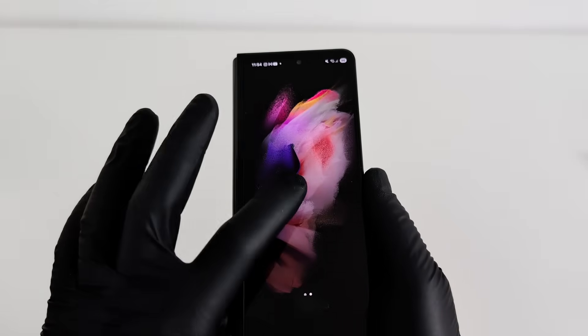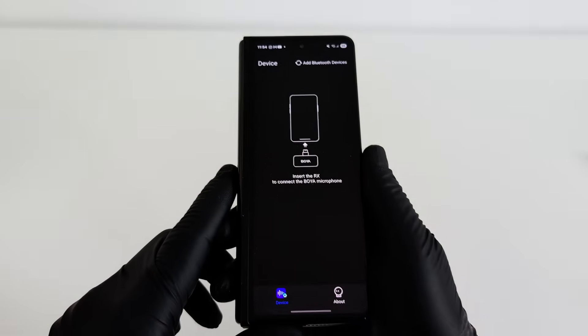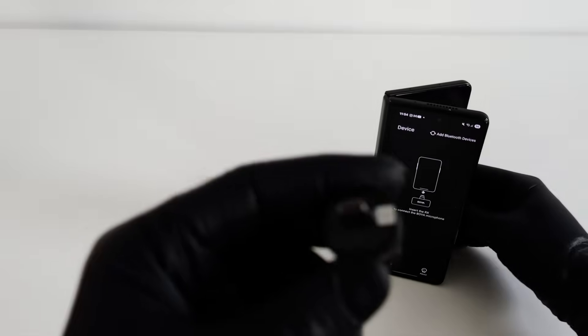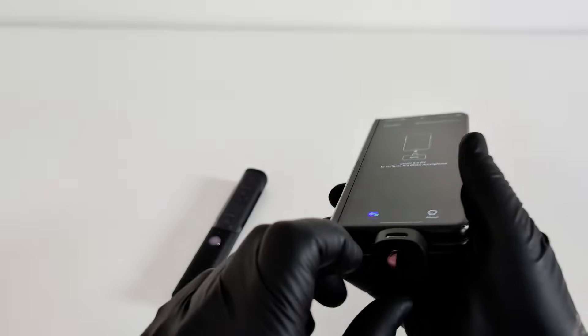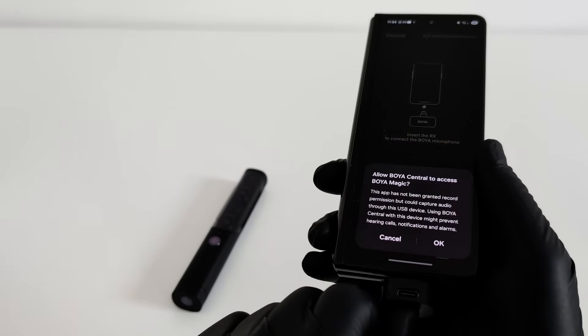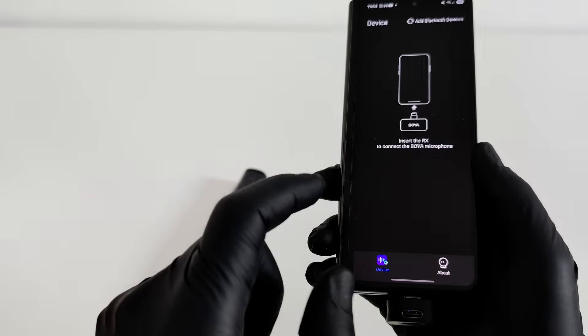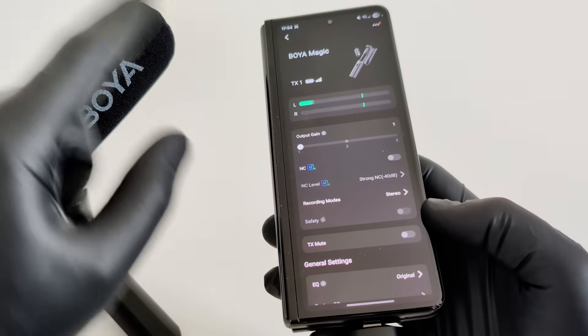The true power of Boya Magic is unlocked when you combine the hardware with the software. Simply connect the receiver to your smartphone, and the system is instantly recognized in the dedicated Boya Central app. This is your personal audio command center, where you can customize absolutely everything.